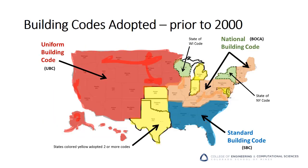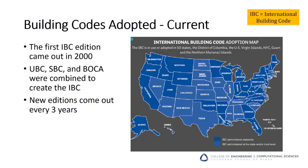Prior to 2000, there was a whole cadre of different building codes that might be referenced depending on the state you were working in. The Uniform Building Code, National Building Code, and Standard Building Code were actually not uniform, national, or standard for the US. However, in 2000, the International Building Code was released. It combined the previous codes into one. Keeping with previous tradition, the International Building Code is not actually international — it only applies within the United States.